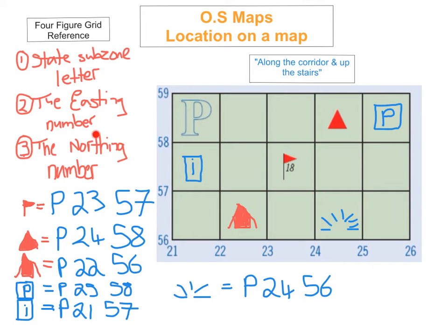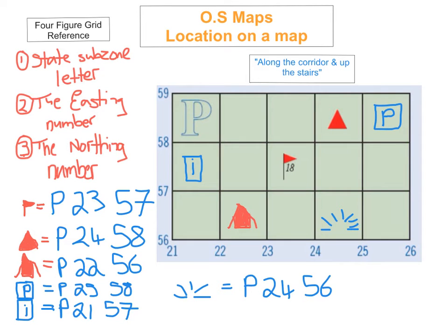Just before I finish on four-figure grid reference, some students find it easy to learn this rhyme called 'along the corridor and up the stairs.' After you find your subzone — which would be P — you go along the corridor, which is the easting number, and then you go up the stairs, which is your northing number. So for the golf course, I get P, then I go along the corridor to find the easting number — which is 23 — and then I go up the stairs, and it's 57. If you find that 'along the corridor and up the stairs' helps you remember which way to go first, use it to help you find your four-figure grid reference.